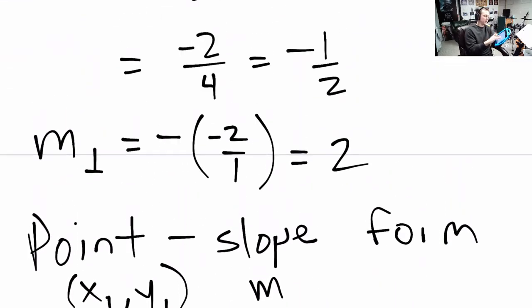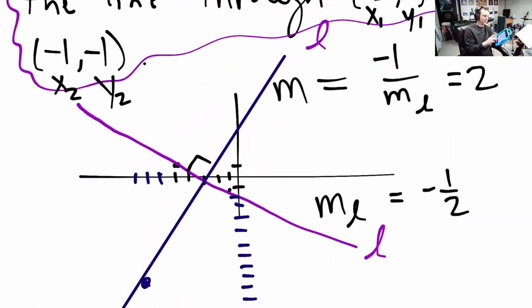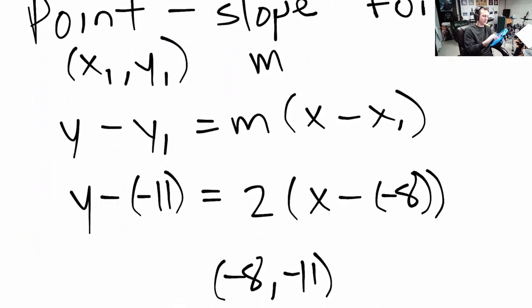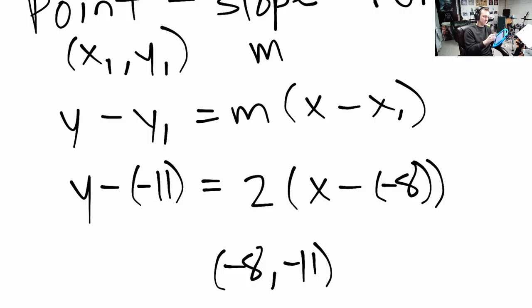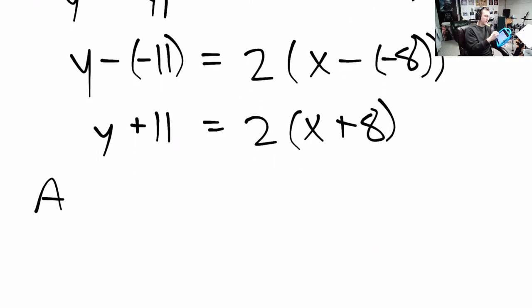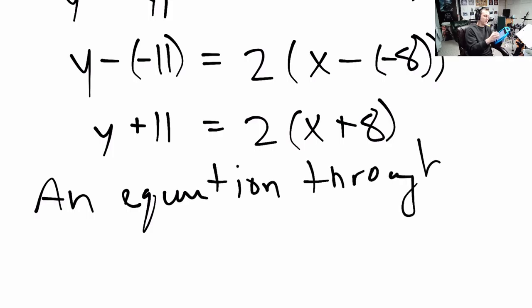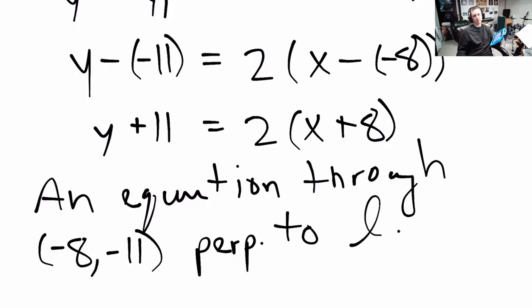Now, I'm switching x1 and y1, right before they were the points for the purple line but now we're just forgetting those because we're working with a different line, so I'm going to just redefine x1 and y1 as these two values. I hope that's okay and this gives us an equation for a line: y plus 11 equals 2 times x plus 8, and this is an equation through the point negative 8 comma negative 11 perpendicular to the line L that we graphed before. So, there we have it.